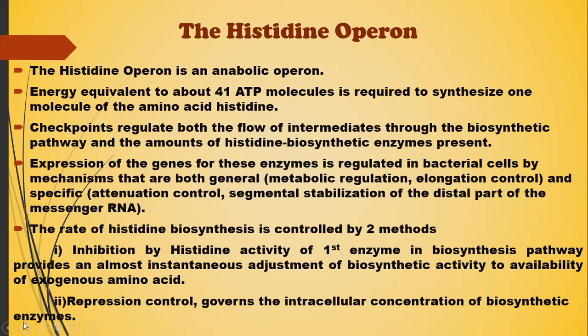The histidine operon is an anabolic operon. An energy equivalent of about 41 ATP molecules is required to synthesize one molecule of the amino acid histidine. There are checkpoints that regulate both the flow of intermediates through the biosynthetic pathway and the amount of histidine biosynthetic enzymes present. Expression of genes for these enzymes is regulated in the bacterial cell by mechanisms that are both general and specific. The rate of histidine biosynthesis is controlled by two methods, the first being inhibition by histidine of the activity of the first enzyme in the biosynthesis pathway.